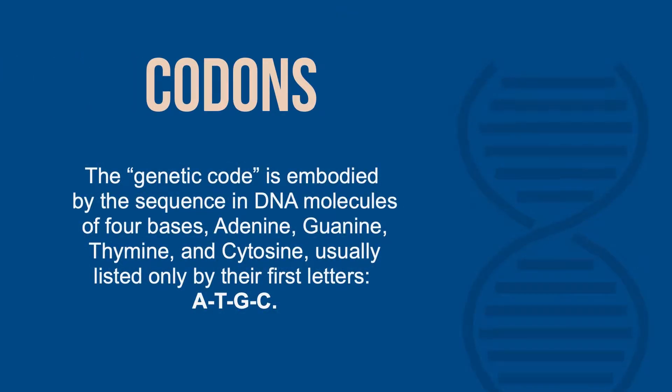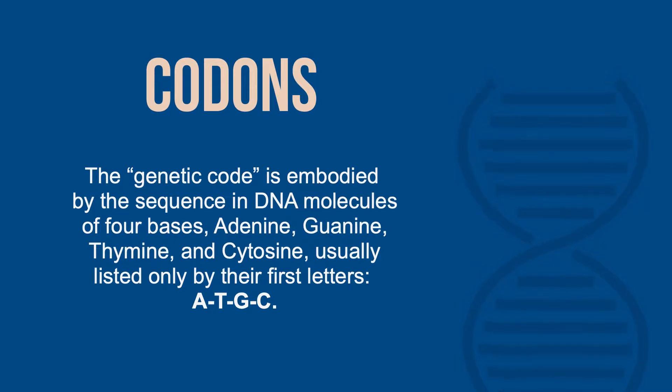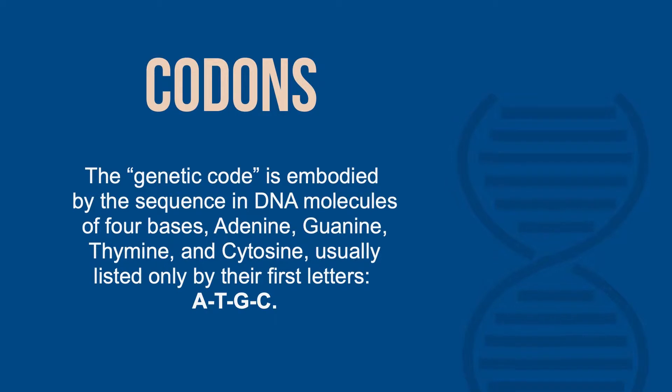A codon is a portion of DNA or RNA which has the information necessary to identify a single unique amino acid in the sequence of a protein. The genetic code is embodied by the sequence in DNA molecules of four bases — adenine, guanine, thymine, and cytosine — usually listed only by their first letters: A, T, G, or C. The code consists of strings of codons in a continuous line making up a single gene.